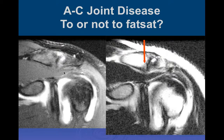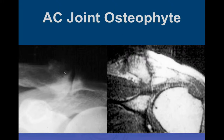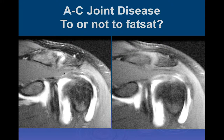You always have to have fat-suppressed images in any musculoskeletal examination, but you can overdo it. You also need non-fat-suppressed images because fat is a great contrast agent in the joint and musculoskeletal system. In that case the fat plane was relatively well-preserved, but we're still considering significant impingement just by virtue of the buckling of the underlying muscle.